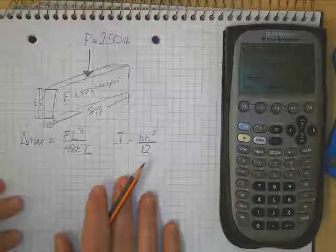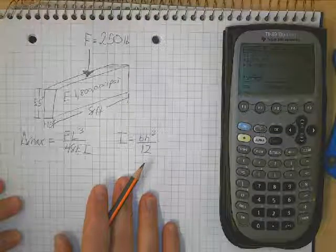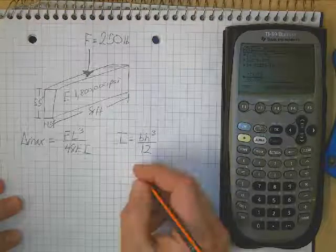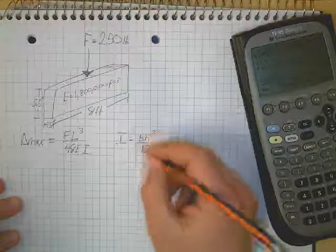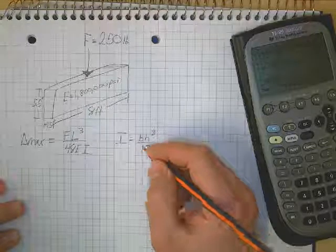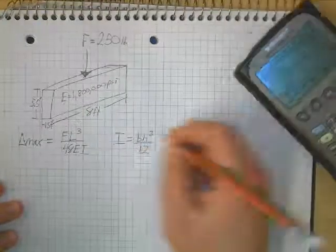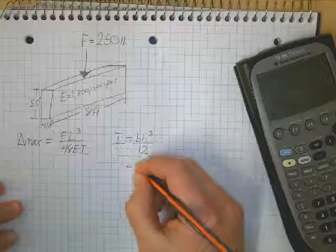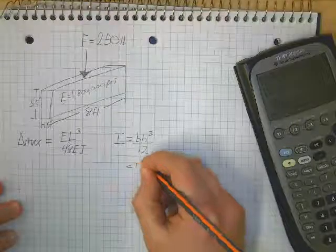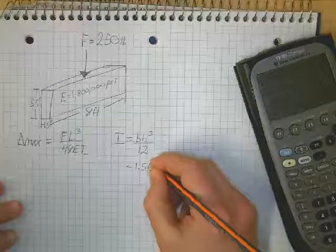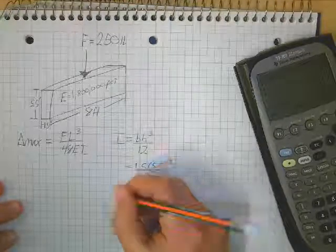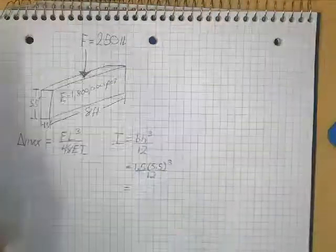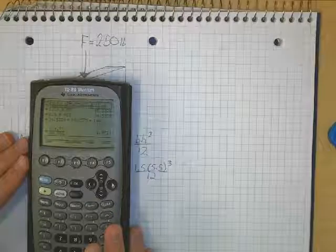So let's solve for our deflection. Pretty straightforward. Let's just plug it in and make sure we know what we're doing. So if I plug in my numbers here for moment of inertia, I have 1.5 times 5.5 cubed divided by 12, and I end up with, let's just plug this in here.